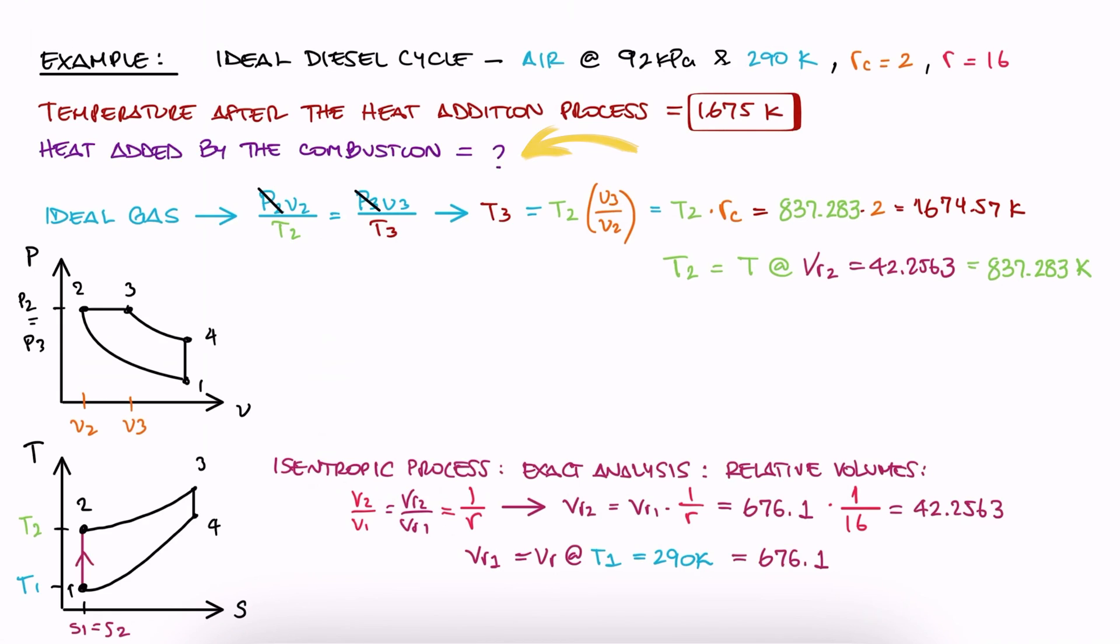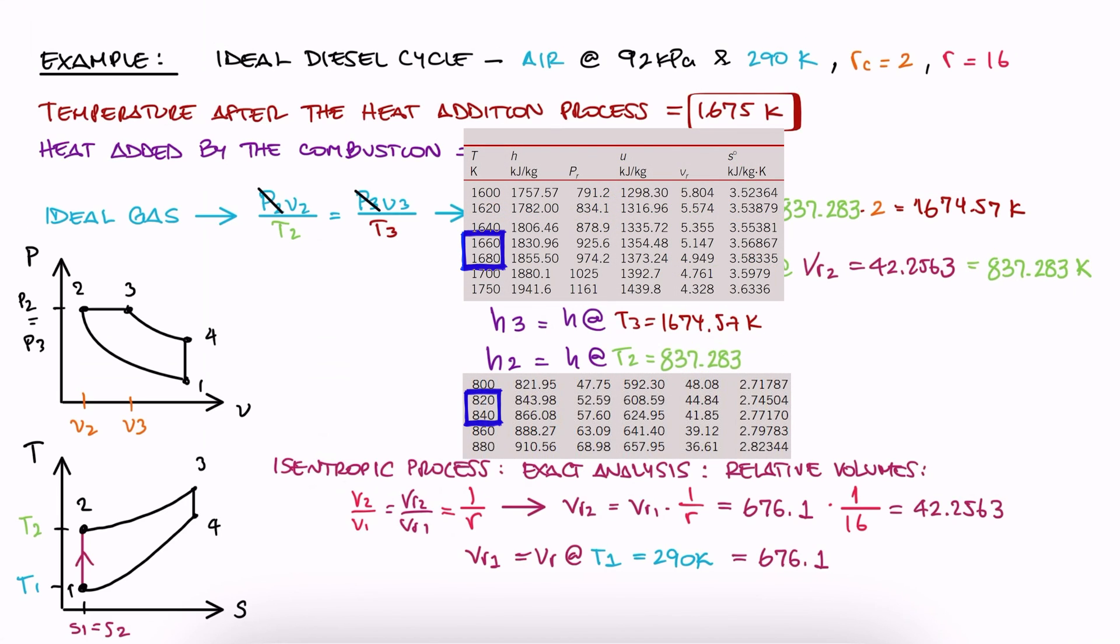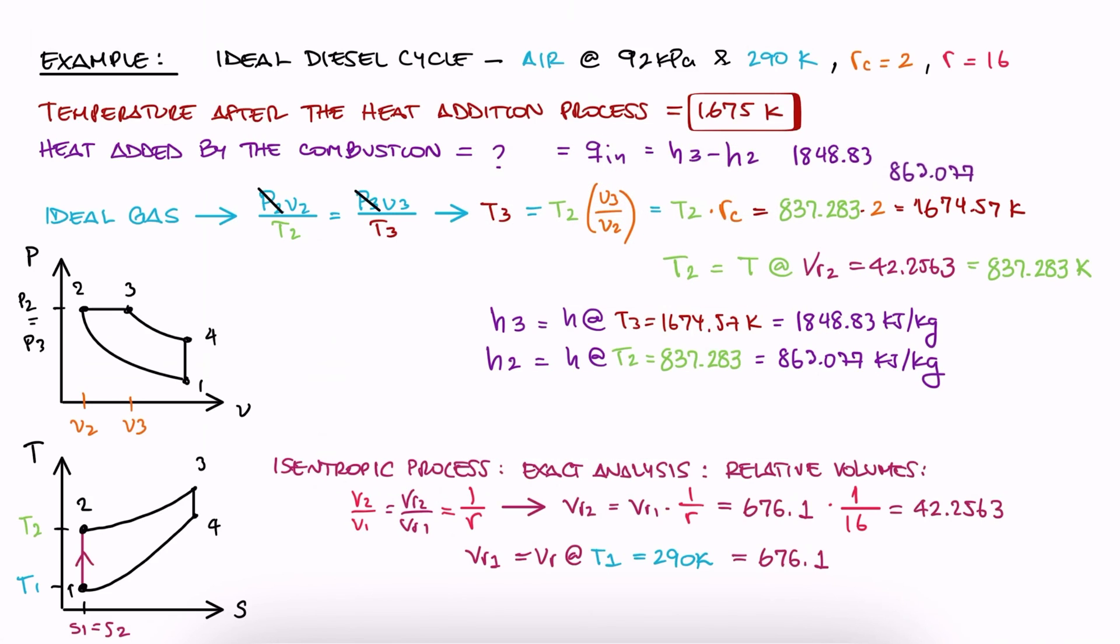Now for the added heat, we learned today that Q in is just H3 minus H2. And since we now have both T2 and T3, we go to our tables and find the H values that correspond to these temperatures. We interpolate for both, and we find that the heat added was 986 kJ per kilogram.